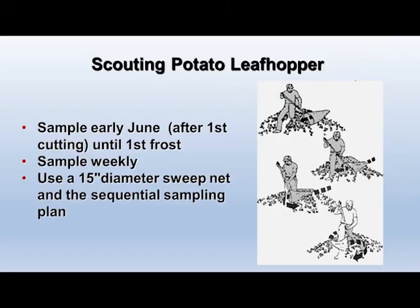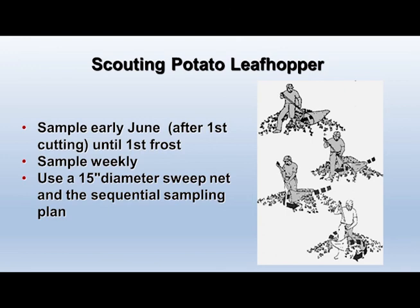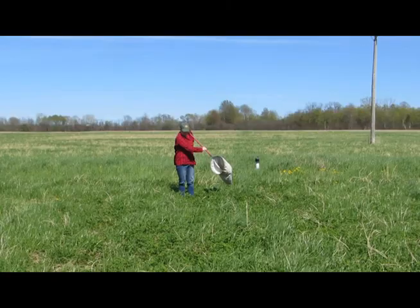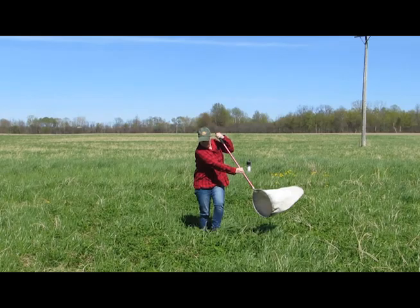To avoid damage by potato leafhopper, scout the field and determine whether you're at an economic threshold. Start sampling in early June after the first cutting until about the first frost. Sample weekly using a 15-inch diameter sweep net and a sequential sampling plan. One sample equals 10 sweeps of the net, sweeping the top six inches of the plants. Use a random sampling pattern about 30 to 50 feet off the edge of the field.